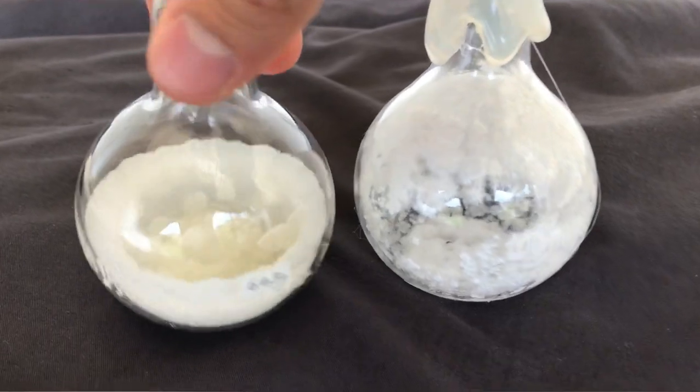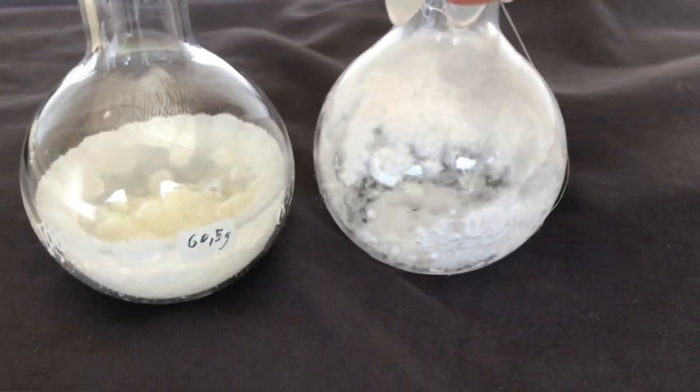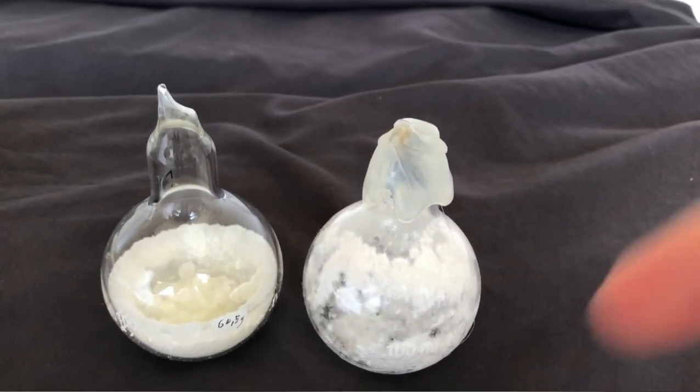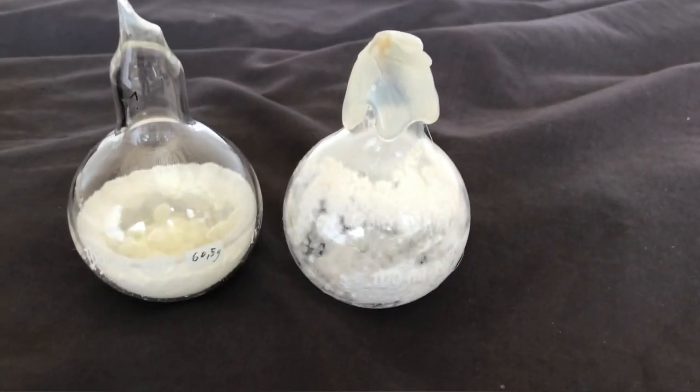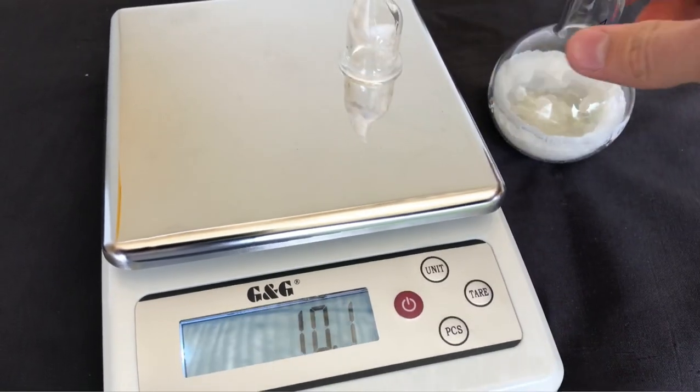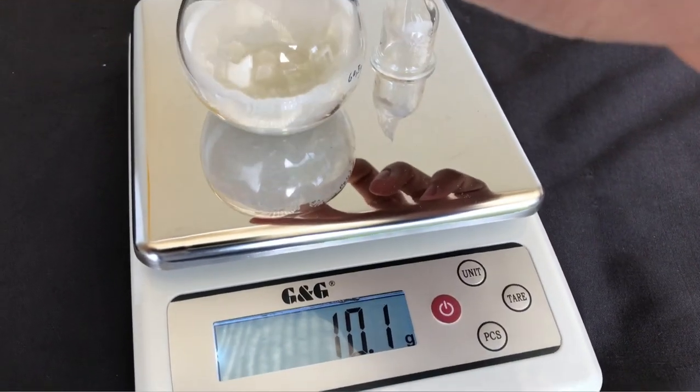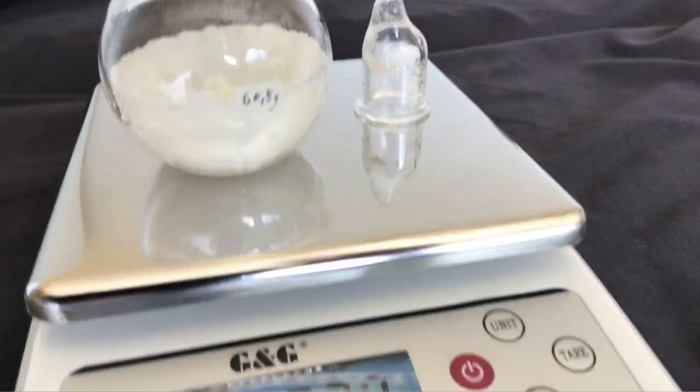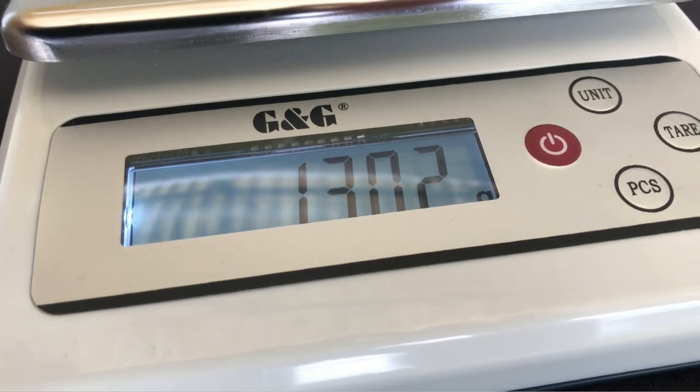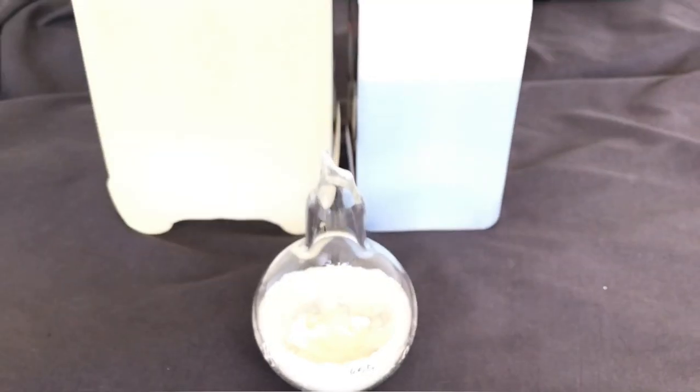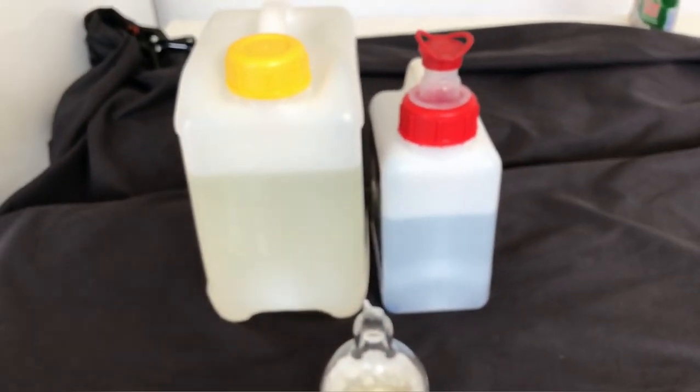In the end we were left with this. One ampule containing a lot of solidified sulfur trioxide and one ampule containing just a little. Sulfur trioxide makes really interesting needle-like shapes. The main ampule was weighed. By subtracting the weight of the flask and the amount of boric acid added, we come to the conclusion that 69.4 grams of sulfur trioxide were obtained. This is just the main flask and this corresponds to a yield of around 35%.